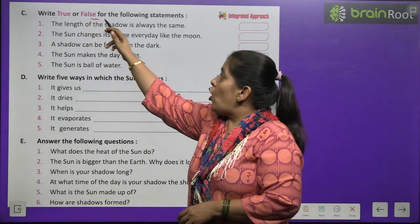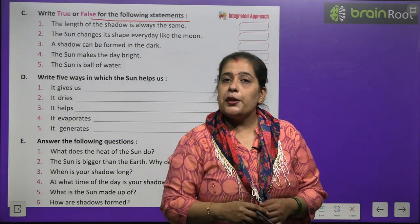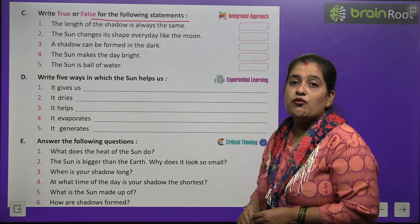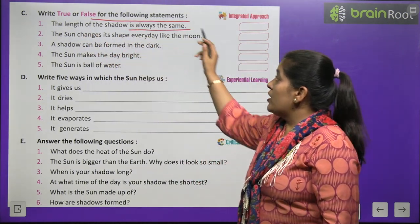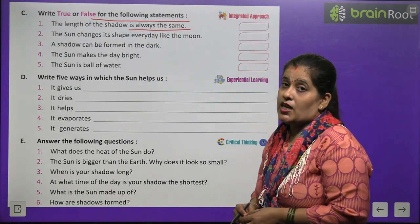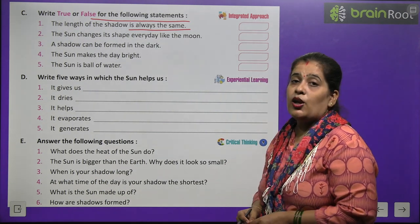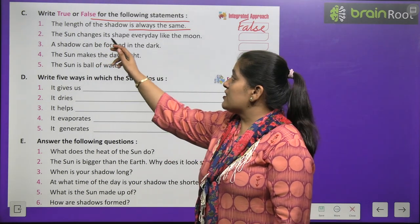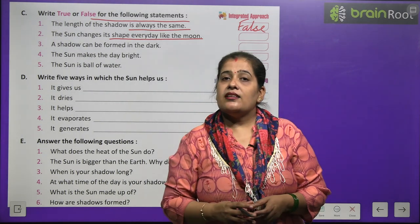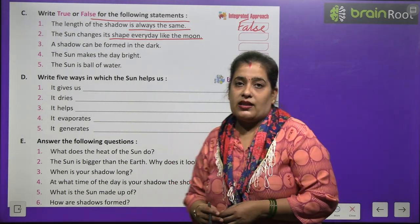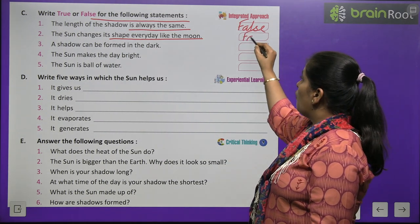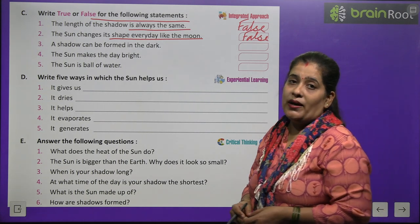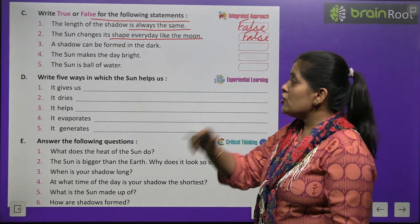Exercise C — write true or false for the following statements. Number 1: The length of the shadow is always the same — shadow ki length hamesha same rehti hai — this is wrong, so we write false. Number 2: The sun changes its shape everyday like the moon — this is also wrong, so we write false. Number 3: A shadow can be formed in the dark — aap isko khud sochenge. Numbers 3, 4, and 5 you will answer by yourself.